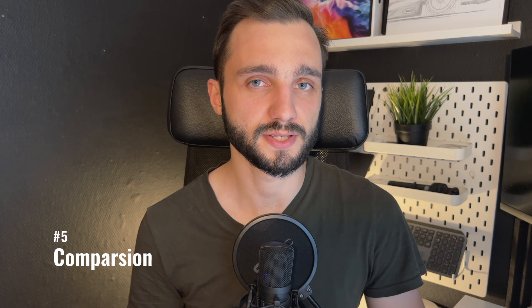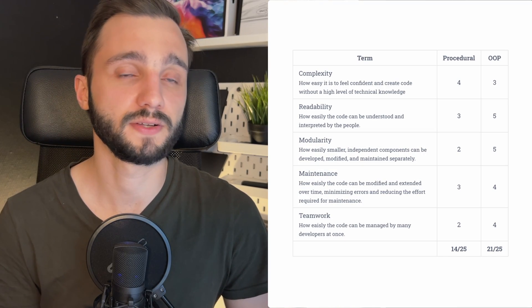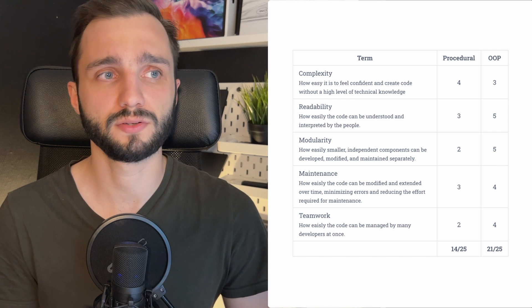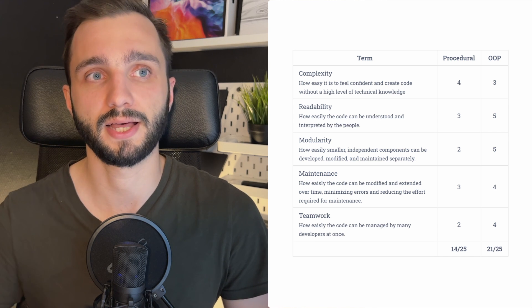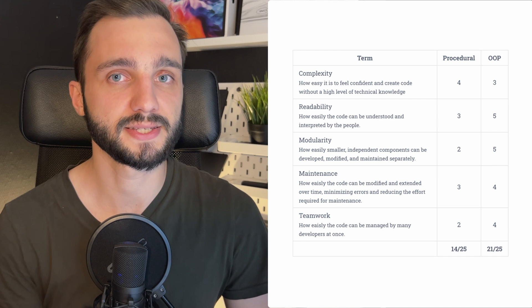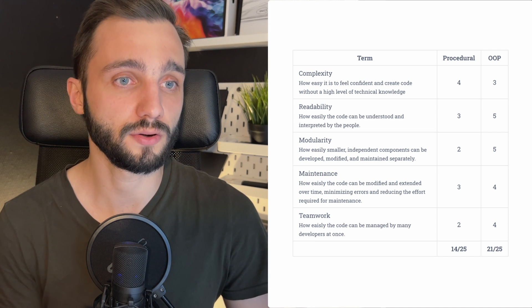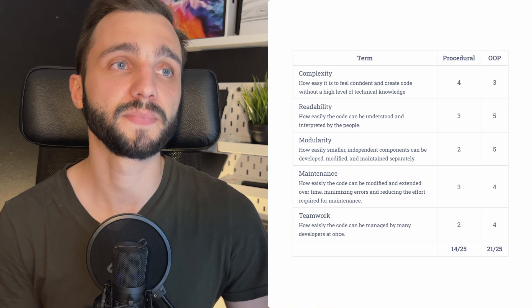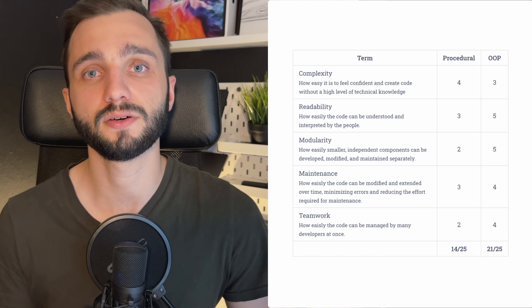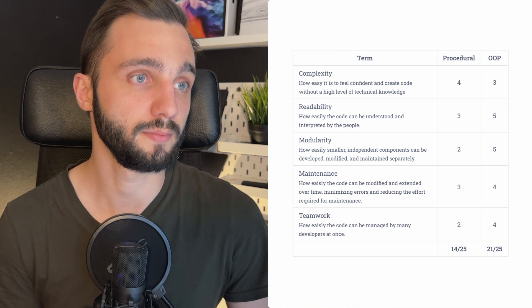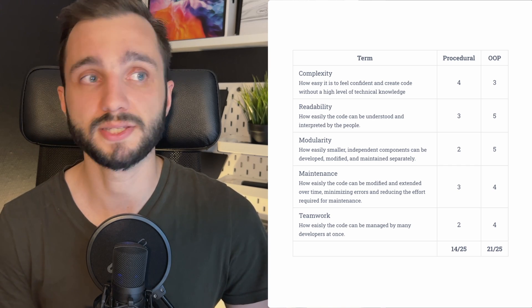Let's compare those options. Please remember the scores here are subjective and based on my experience, my needs, and my habits — a final score of one doesn't always mean it is better than another. We have a simple table describing five terms. I won't go through all of them so if you want to check them deeply, pause the video and analyze the table. For me the object-oriented approach wins with a score of 21 out of 25 available points. The procedural approach gets only 14 out of 25. Object-oriented wins in readability, modularity, maintenance, and teamwork, while procedural wins in complexity.